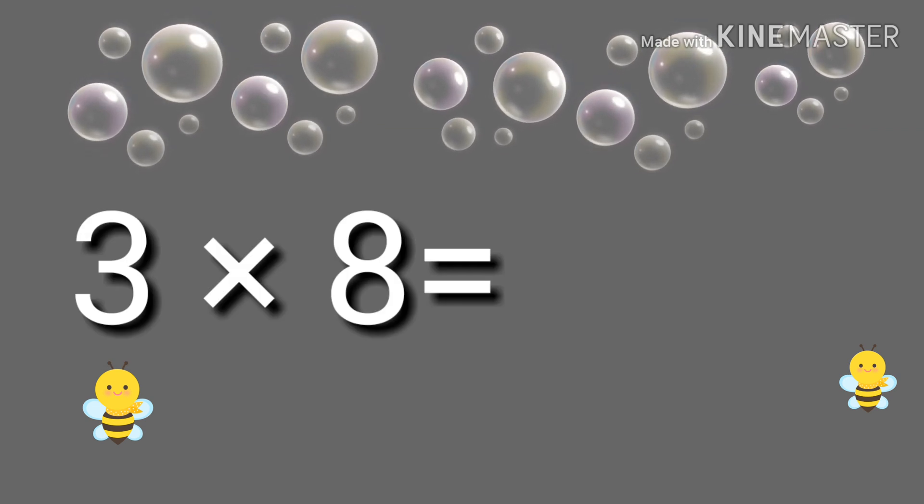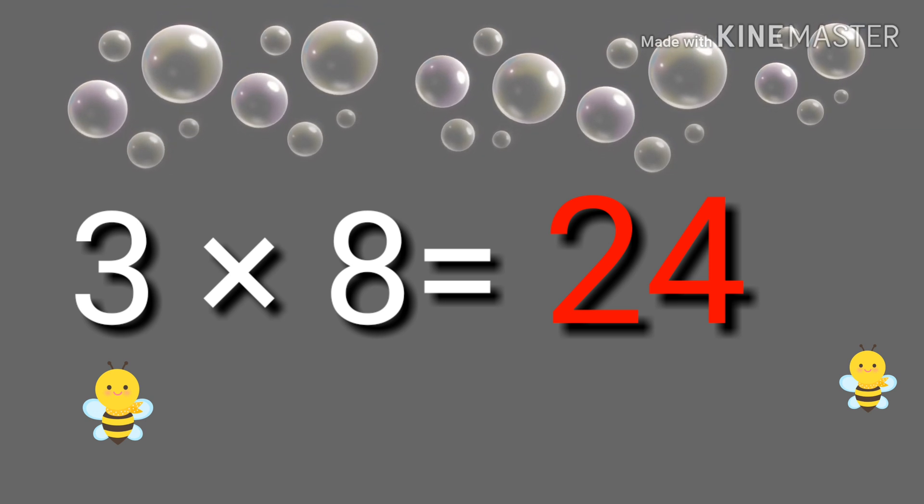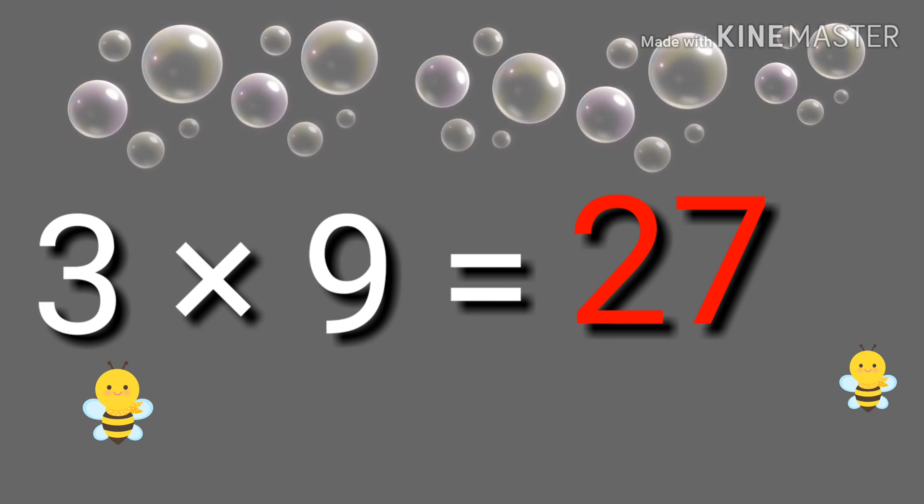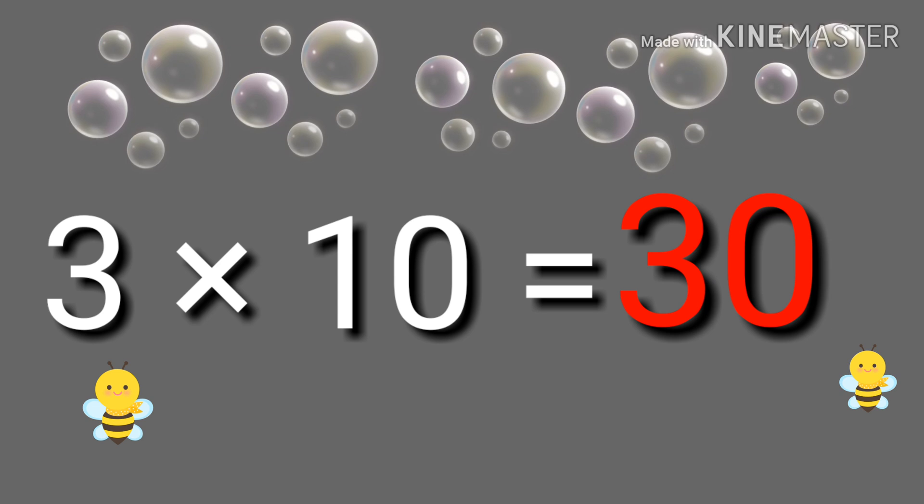3 times 8 equals 24. 3 times 9 equals 27. 3 times 10 equals 30.